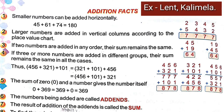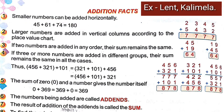Now we will know the addition facts. What are the facts? Before doing the addition, we have to know these facts. First, smaller numbers can be added horizontally. For example, 45 plus 61 plus 75 — the numbers are written horizontally and the answer is 181. For smaller numbers, we can write horizontally.